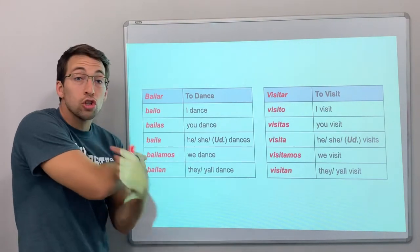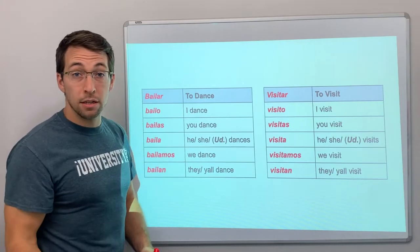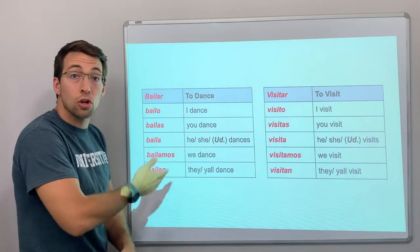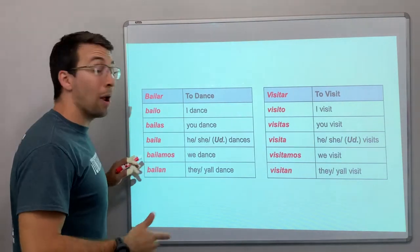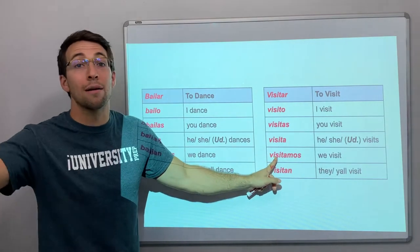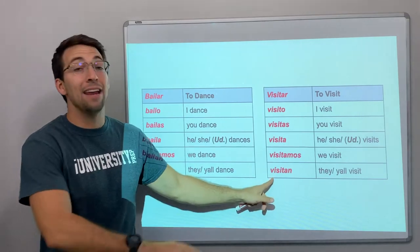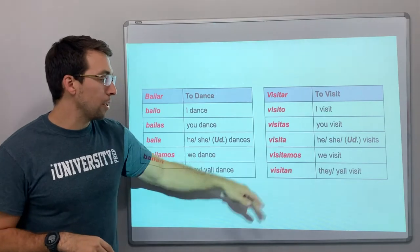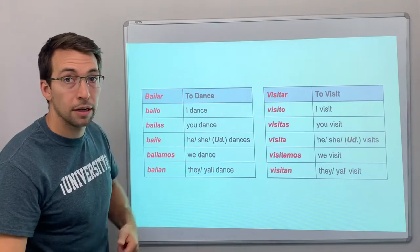Nosotros bailamos — it's a bit more redundant in Spanish, but it's correct to say nosotros bailamos toda la noche — we dance all night long. Nosotros visitamos nuestra abuela — we visit our grandma. Ellos visitan su abuelo — they visit their grandpa. You can use the subject pronoun before the verb; it's totally fine.